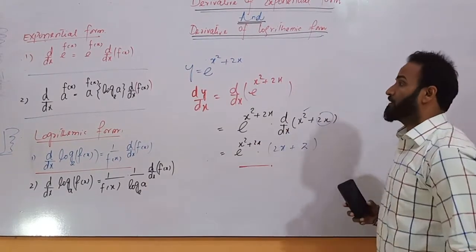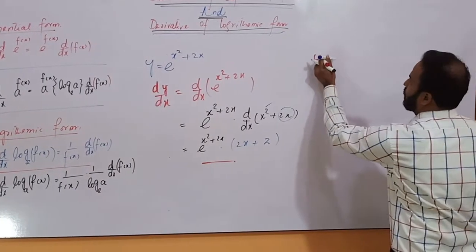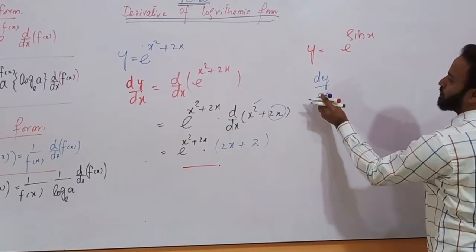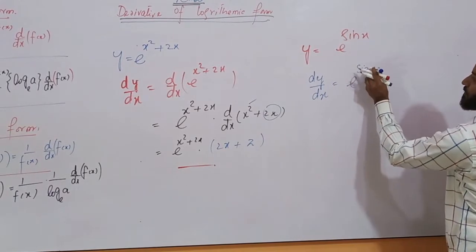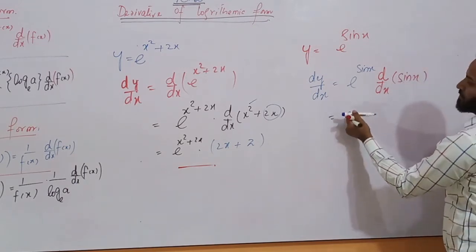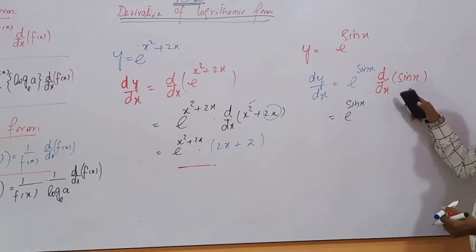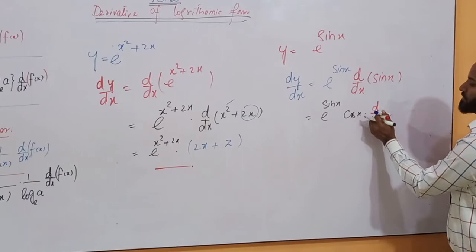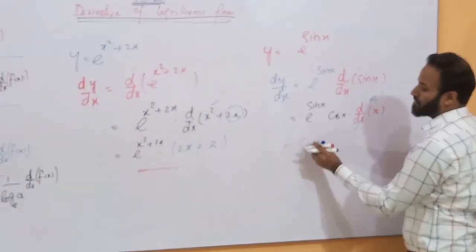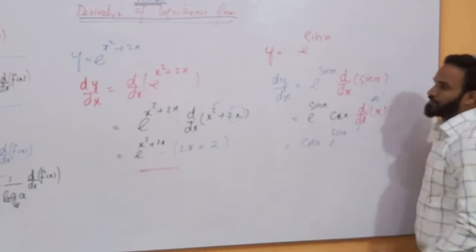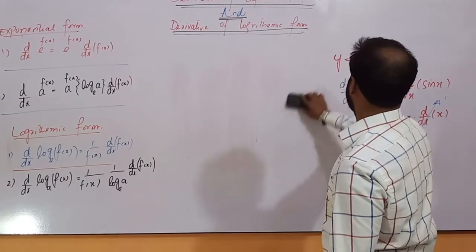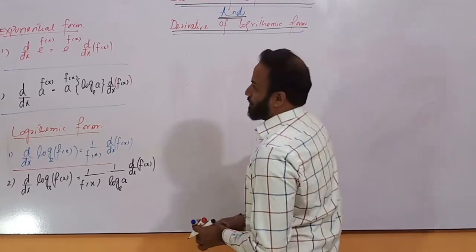Another example regarding the derivative of the exponential form: y equals e raised to power sin(x), and the derivative with respect to x. As it is e^sin(x), and the derivative of sin(x) is cos(x), and the derivative of its angle x with respect to x is 1. So the answer is cos(x) times e^sin(x).